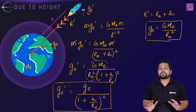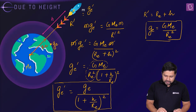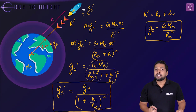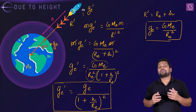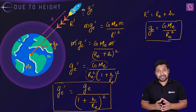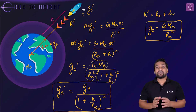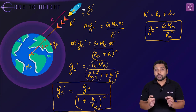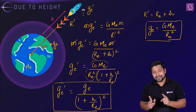Now how does it vary? If the value of h goes on increasing, then the denominator goes on increasing and the value of g_e_dash goes on decreasing. This means that as we move further away from the surface of the earth, the value of acceleration due to gravity goes on decreasing.